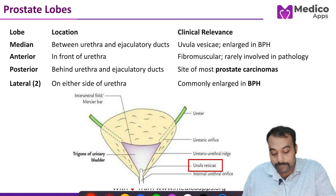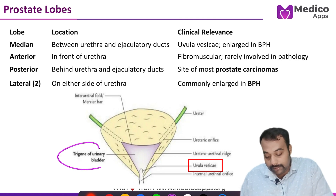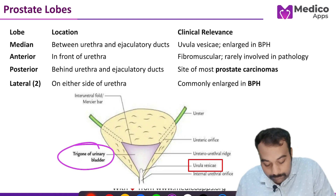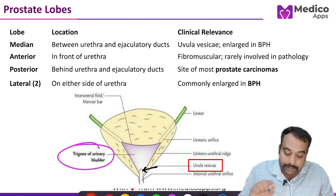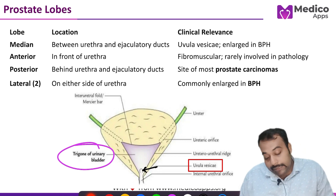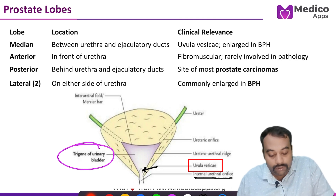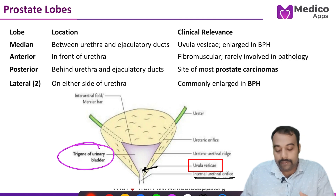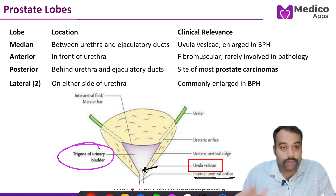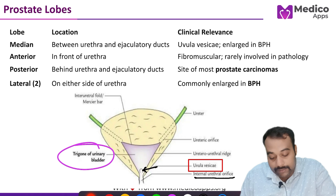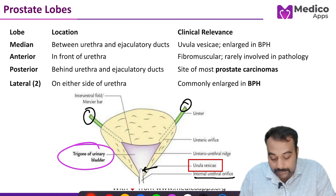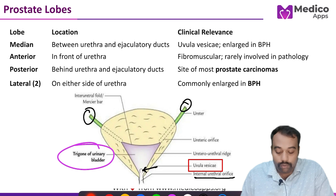In this image you can appreciate the urinary bladder shown with the yellow shadow, and this one is your trigone. You are able to appreciate the uvula vesicae as a small elevation or small ridge, just beneath the internal urethral orifice, as mentioned. There is also a ureter on both sides forming the trigone of the bladder.